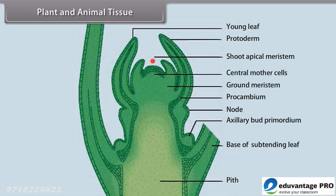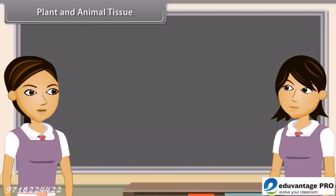Some plant tissues are also dead tissues. The growth in plants is limited to some regions — there are some tissues in plants that divide. But in animals, growth is not restricted to certain places; it is uniform. In animals, the structural organization of organ systems is more specified and localized.